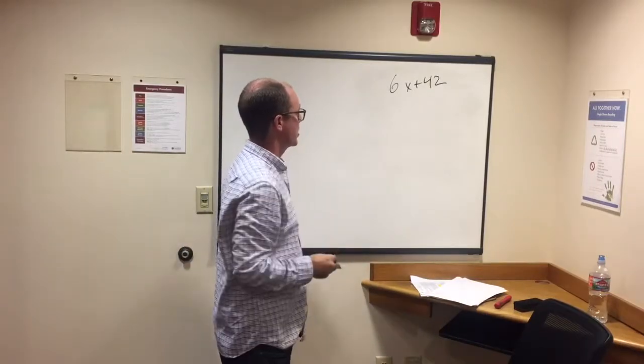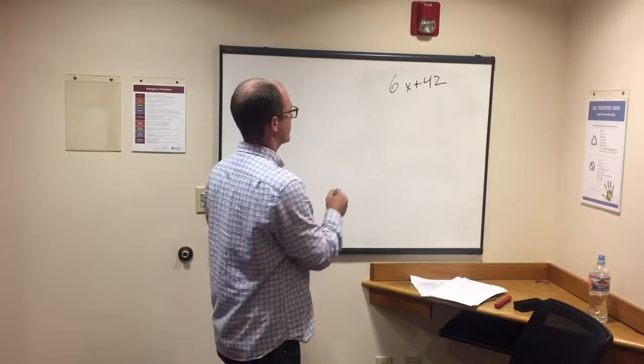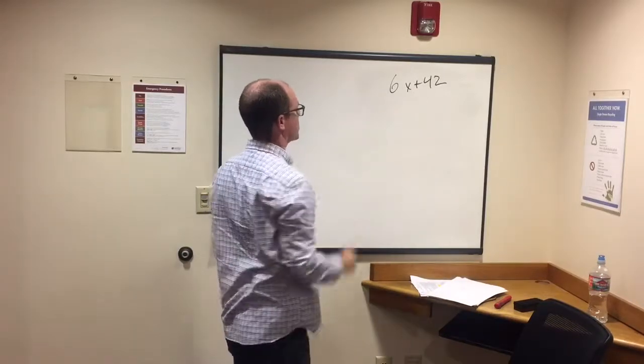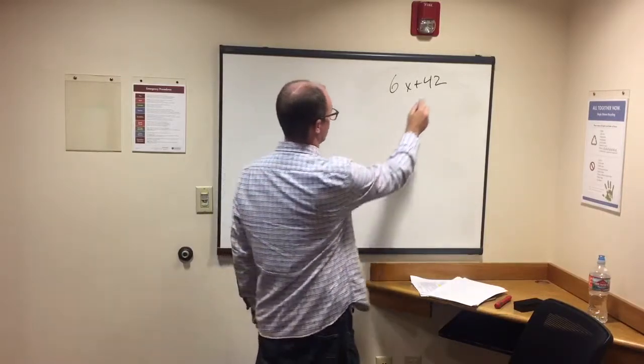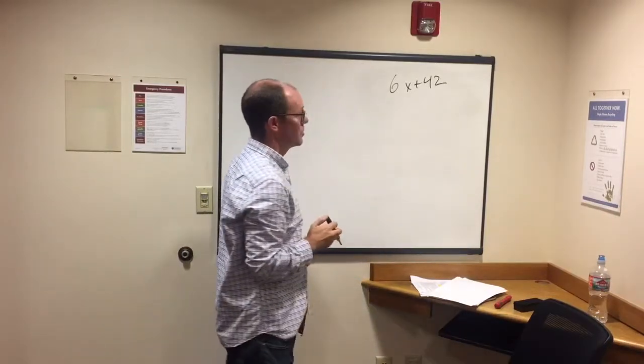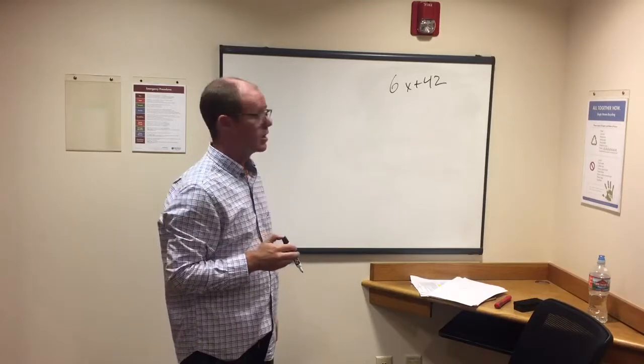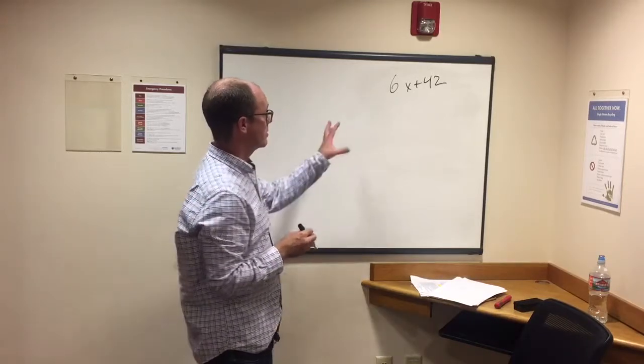you're factoring an expression like this is trying to figure out what can we take out of both 6x and 42. With 42, you know that 6 times 7 is 42, so you can evenly take a 6 out of 42 and 6 out of 6x.